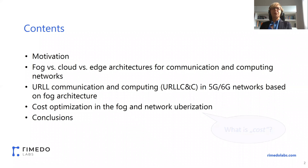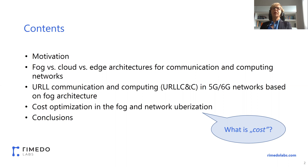Let me first introduce the contents of my presentation. First, there will be some words about motivation, and then fog versus cloud versus edge architectures for communication and computing networks, communication and computing in 5G and 6G networks based on fog architecture. Then we will discuss cost optimization, what cost means, and network uberization. Finally, we will draw some conclusions, observations, and a future outlook.